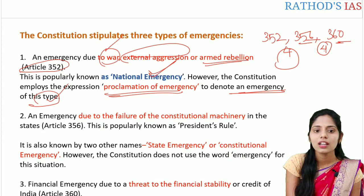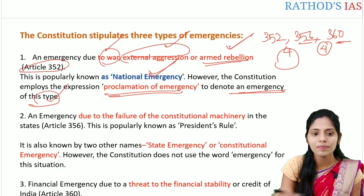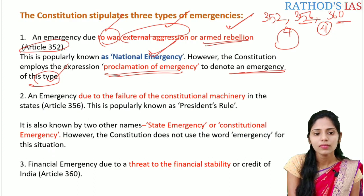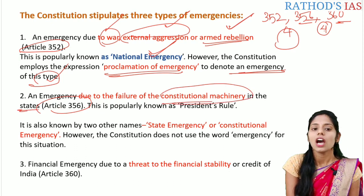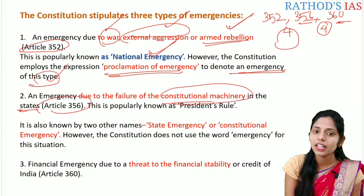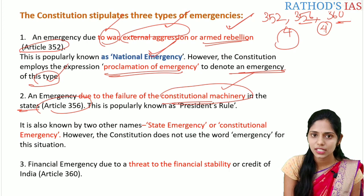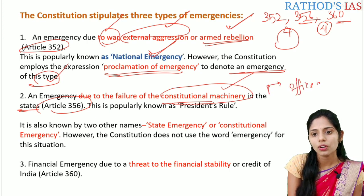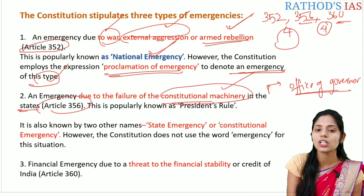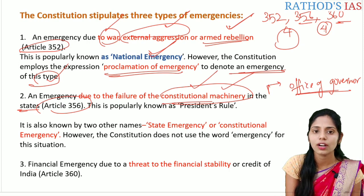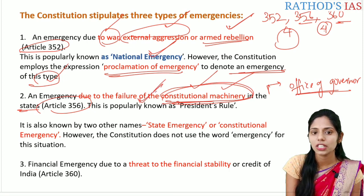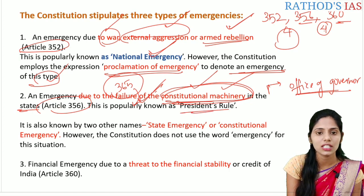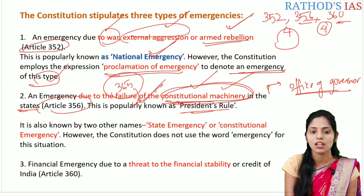We already discussed the difference between war, external aggression, and armed rebellion. Article 356 talks about an emergency mainly due to the failure of constitutional machinery in the state. The centre knows about a constitutional machinery breakdown through the office of the governor. Whenever states are not obeying the laws made by parliament, it is called a constitutional machinery failure. According to article 365, the president can impose president's rule or state emergency in the state according to article 356.